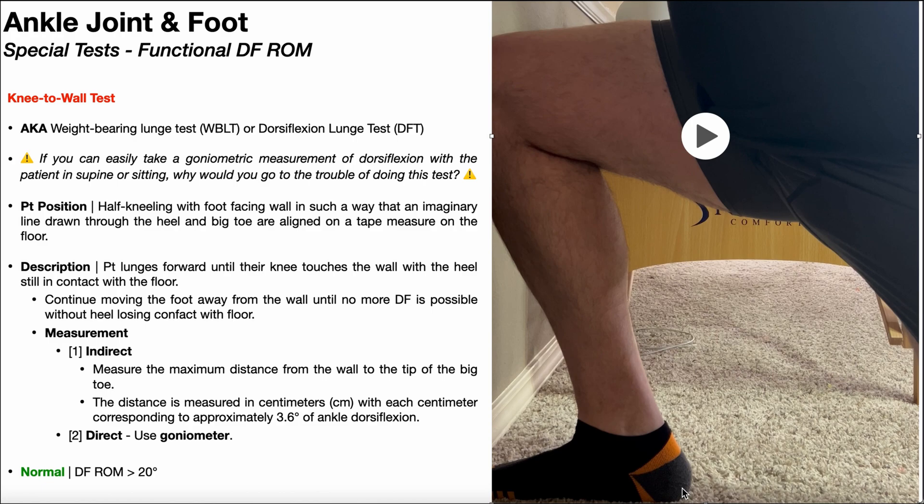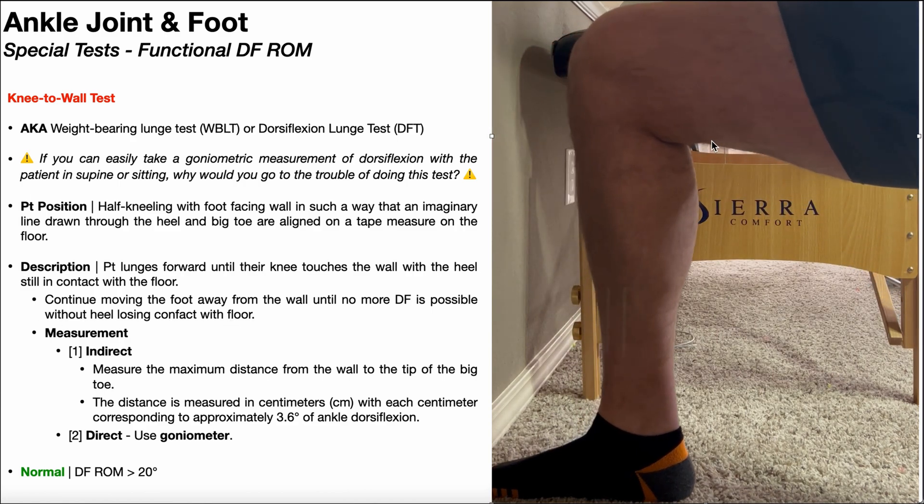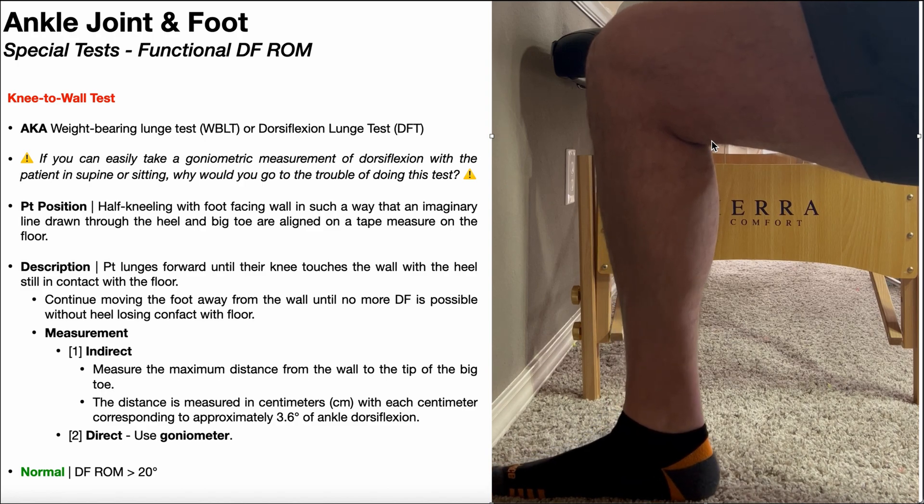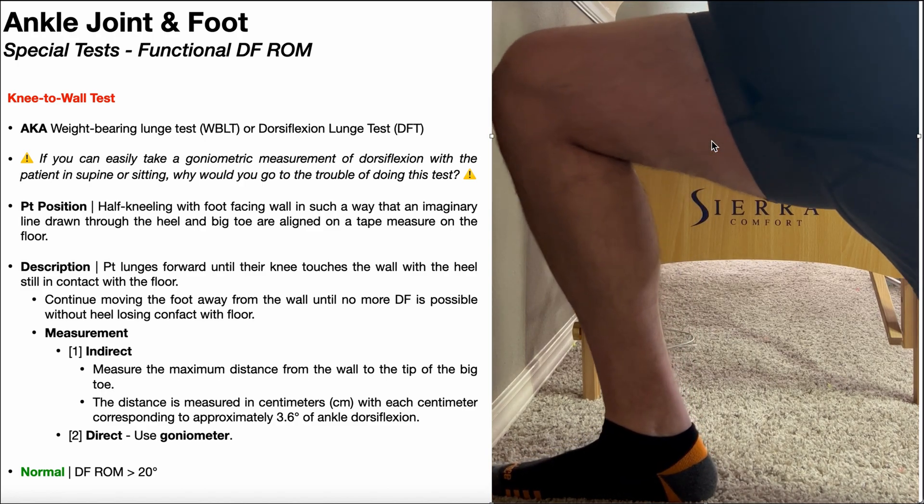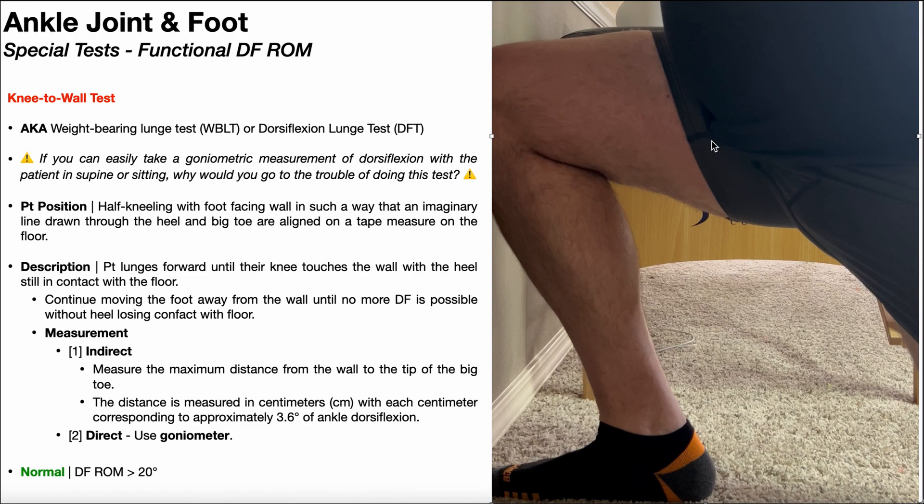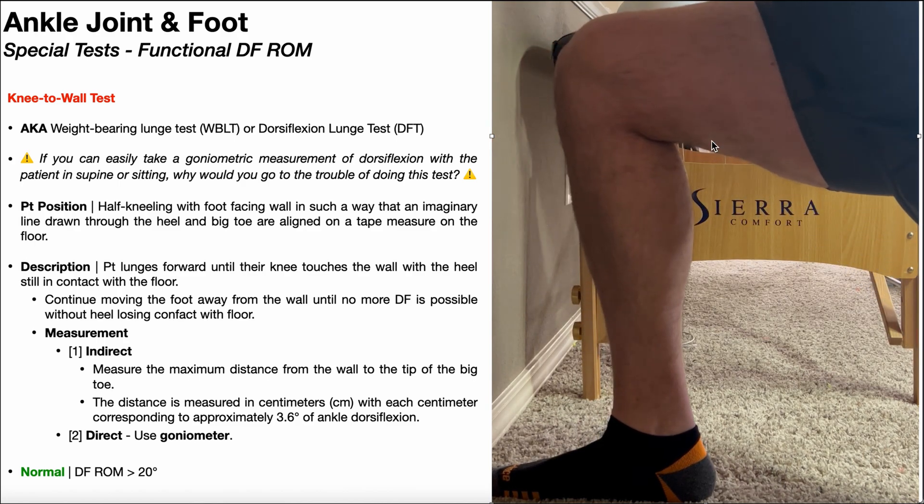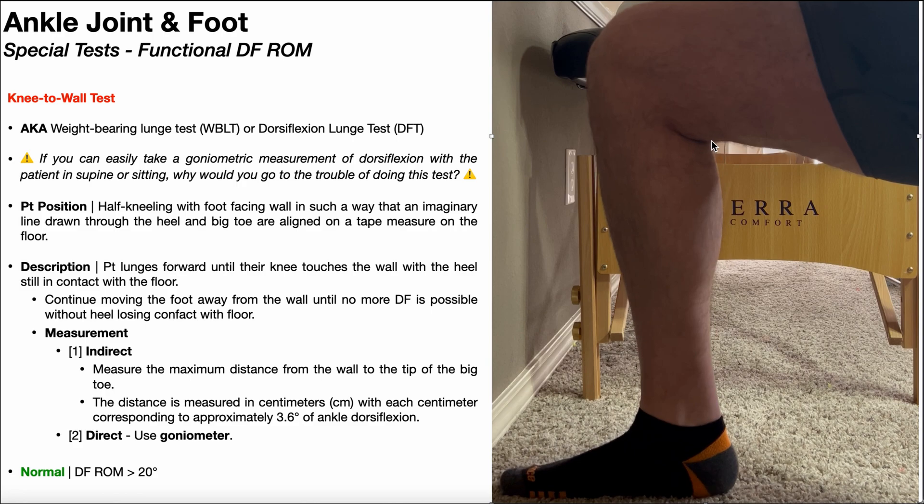I'm able to do this. So what I'm going to do from there is I'm going to continue moving the foot away from the wall, slowly but surely, and then dorsiflexing forward, trying to touch my knee to the wall until no more dorsiflexion is possible without the heel losing contact with the floor. So I've got a little more dorsiflexion in me. So I move the foot away from the wall a little bit, and then same thing. Try to keep the heel in contact with the floor, touch the knee to the wall. I was able to do that. So let's back it up a little bit more.